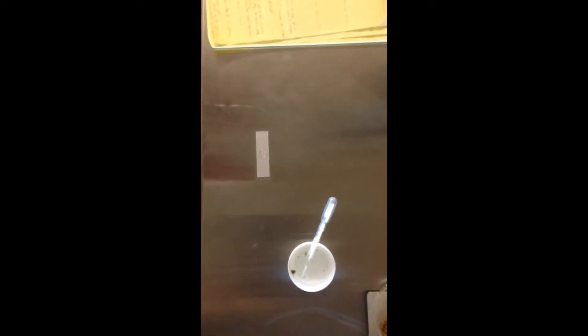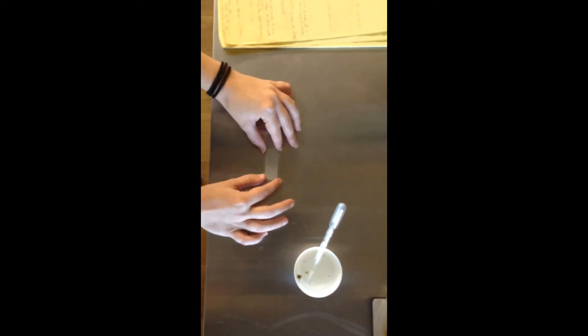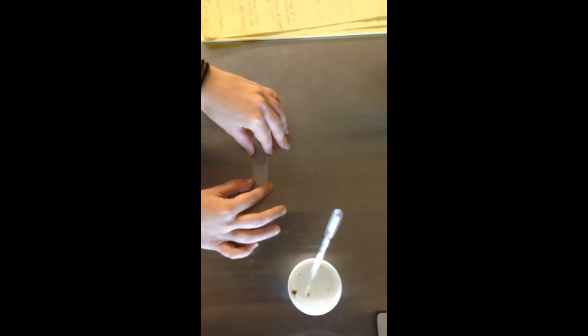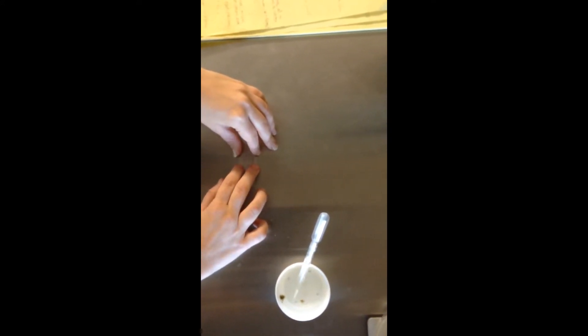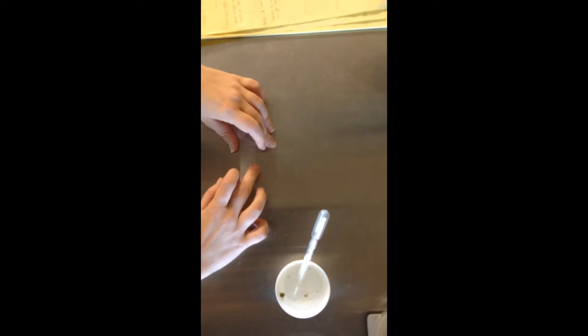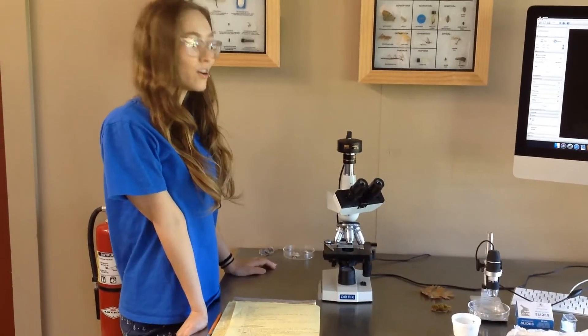Then you're going to want to take your little slide cover. You're not going to want to plop it down on top. You're going to make sure you keep your fingers away from it so you're not getting a bunch of fingerprints. You want to start at one end, gently press it down to the other end, pressing it down and getting rid of all those bubbles. That is your slide right there.